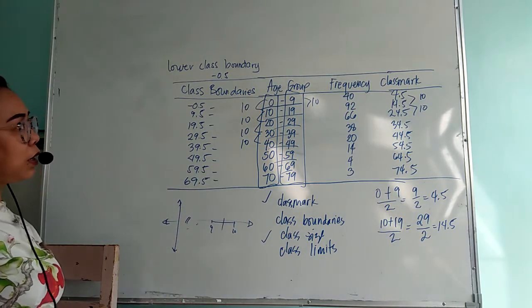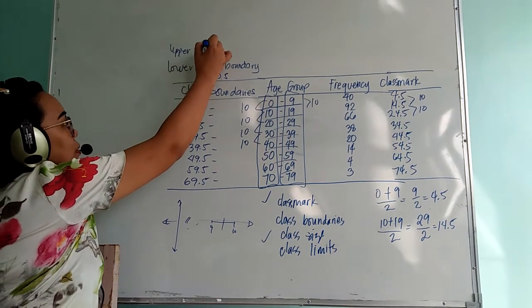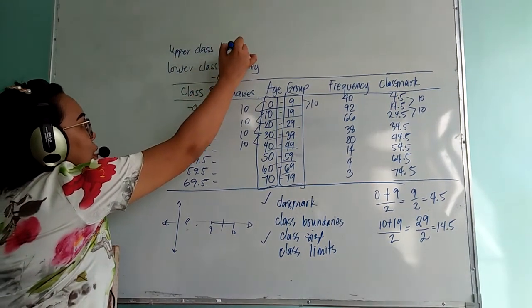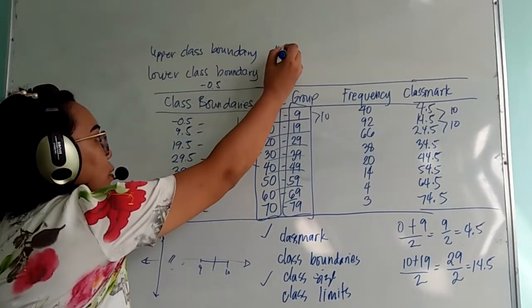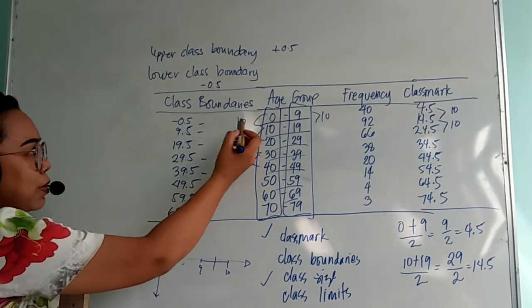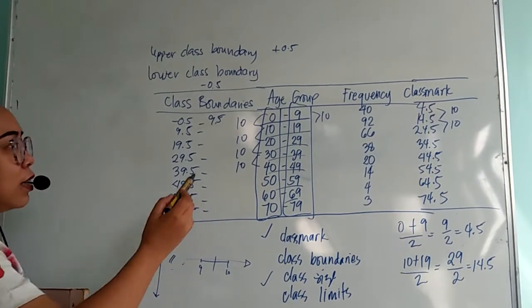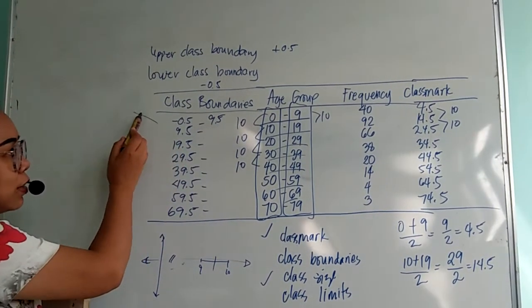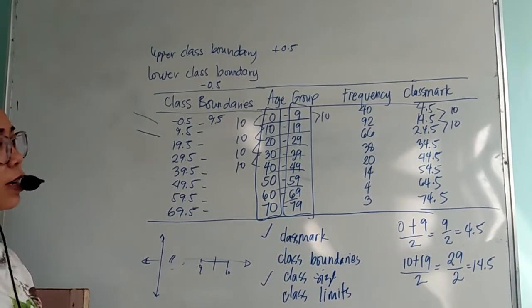And to determine the upper class boundary, you simply add 0.5. For the first upper limit, this is 9 plus 0.5, so we have 9.5. If you notice, the upper limit of the first class interval is also the lower limit of the second class interval.